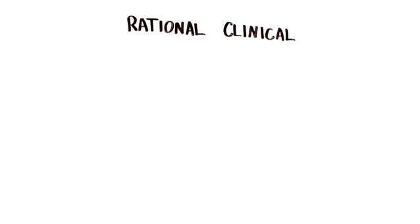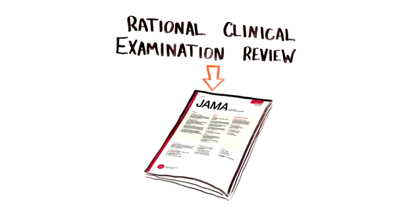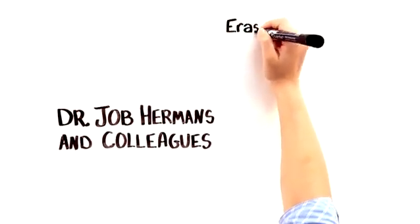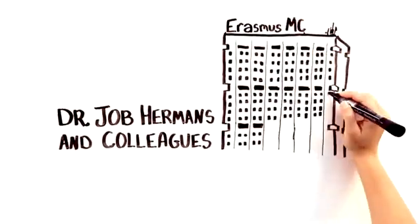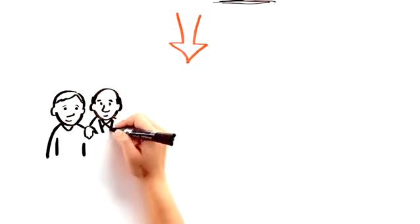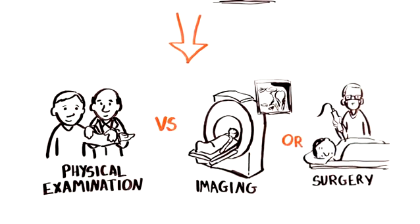In a rational clinical examination review in the August 28, 2013 issue of JAMA, Dr. Jobe Hermans and his colleagues from Erasmus MC University Medical Center Rotterdam in the Netherlands review the medical literature to assess the diagnostic accuracy of physical examination compared to imaging or surgery for diagnosing rotator cuff pathology.